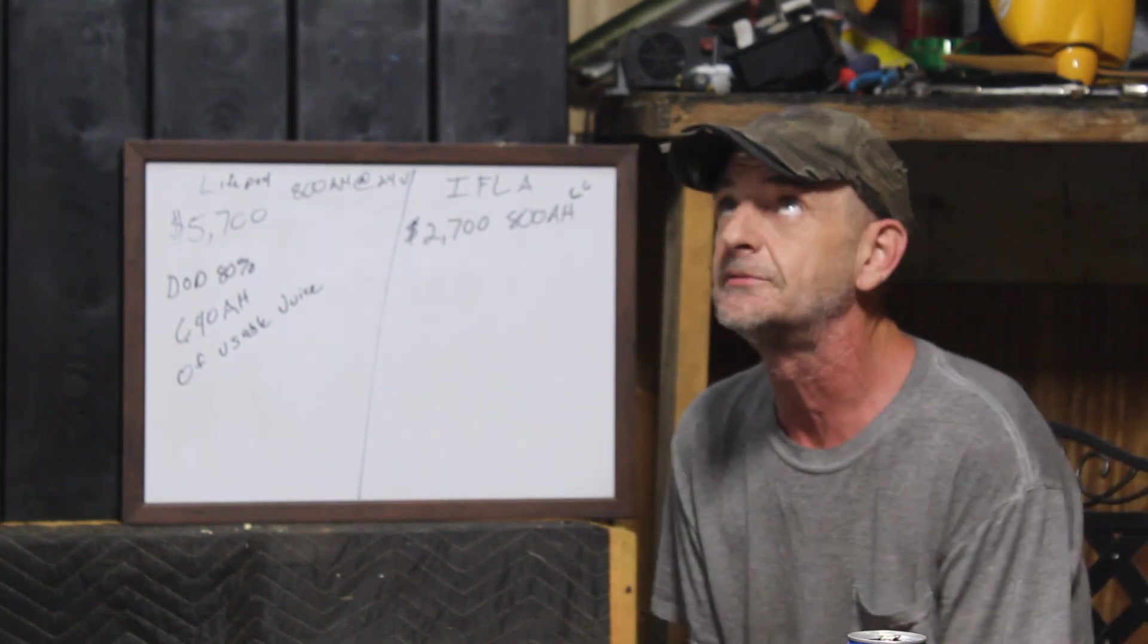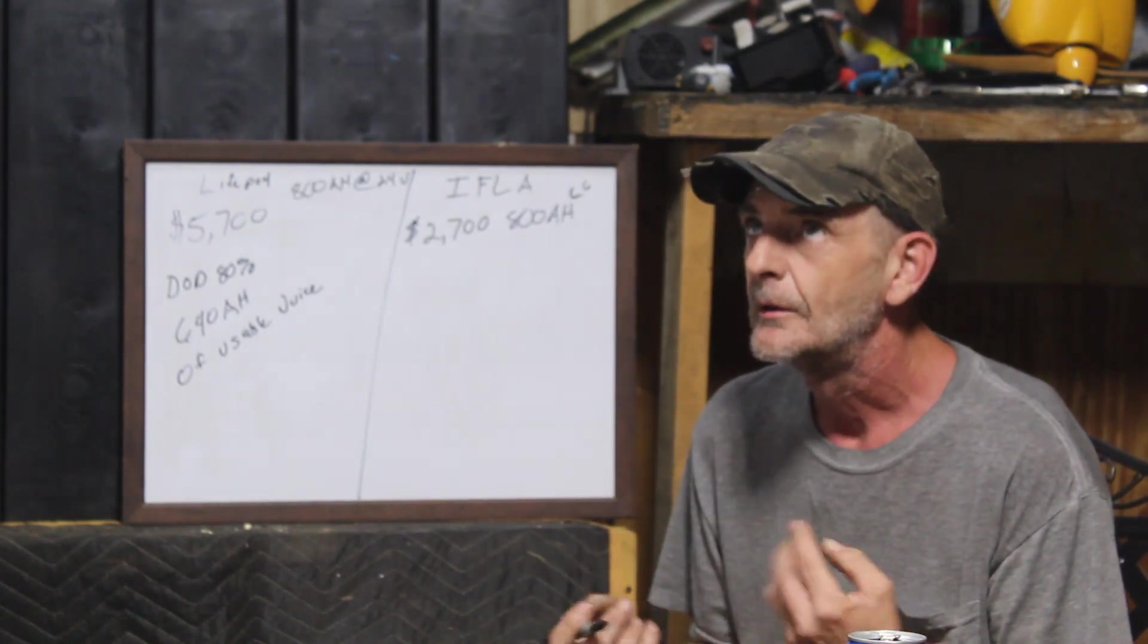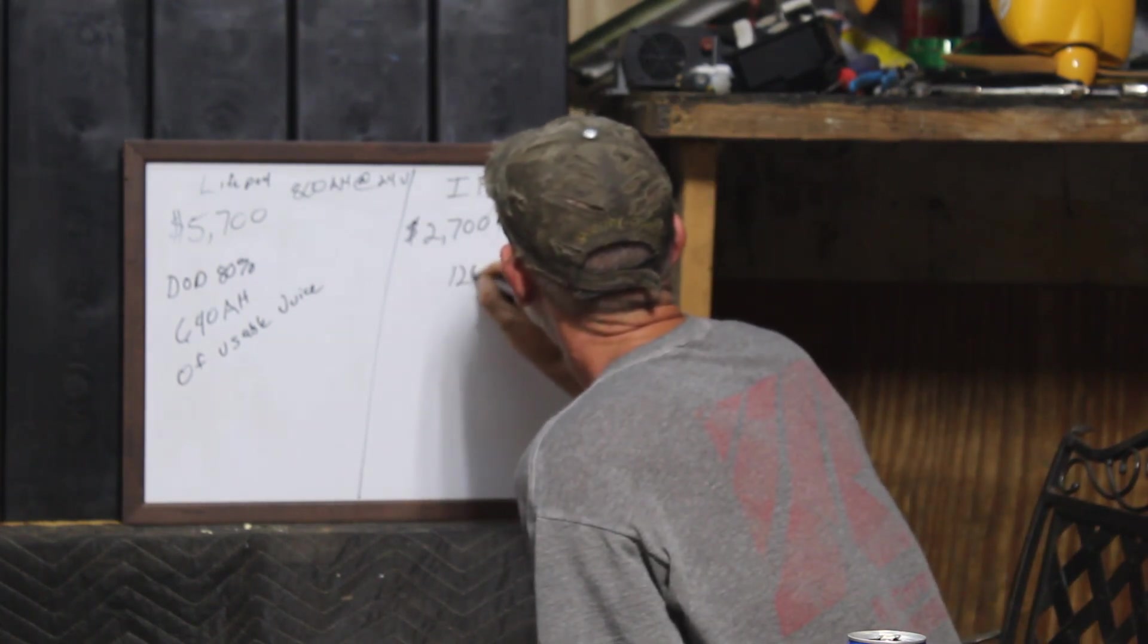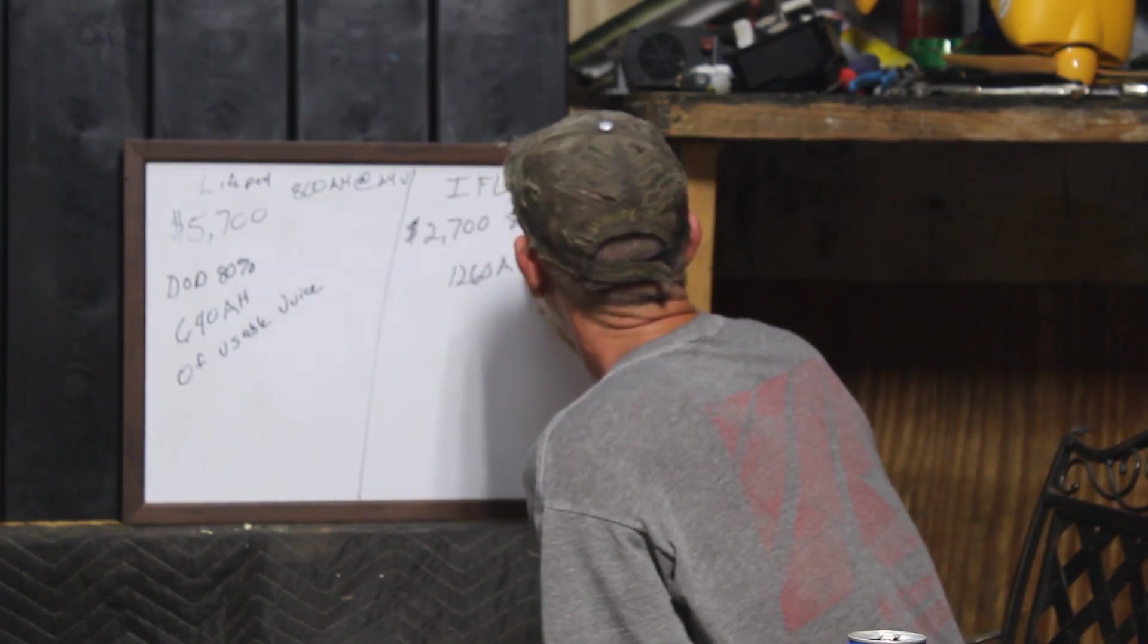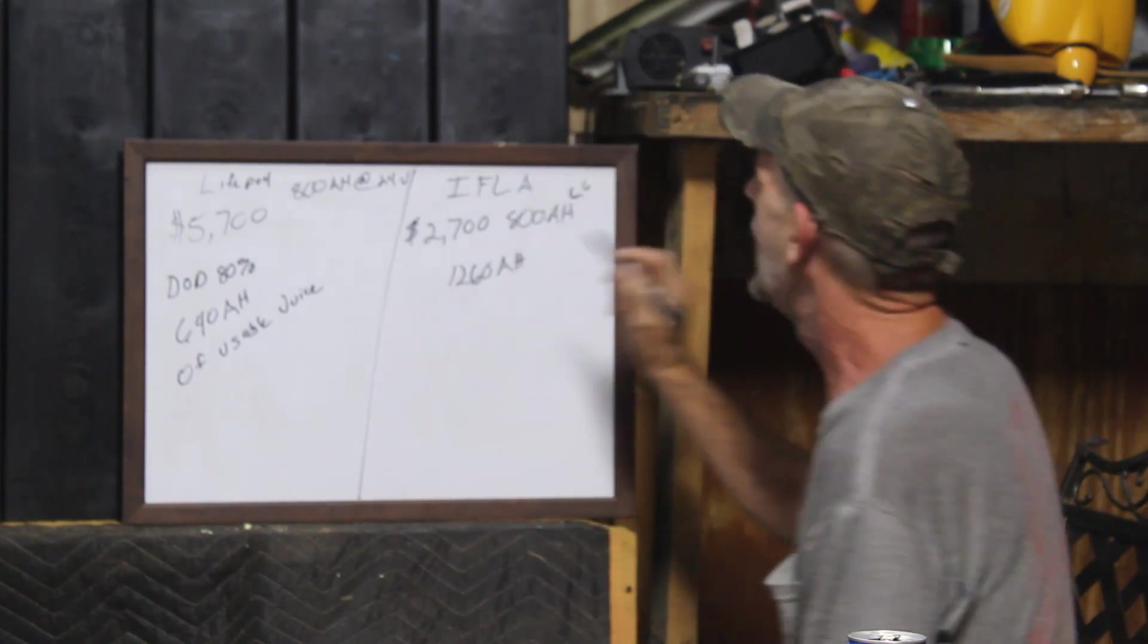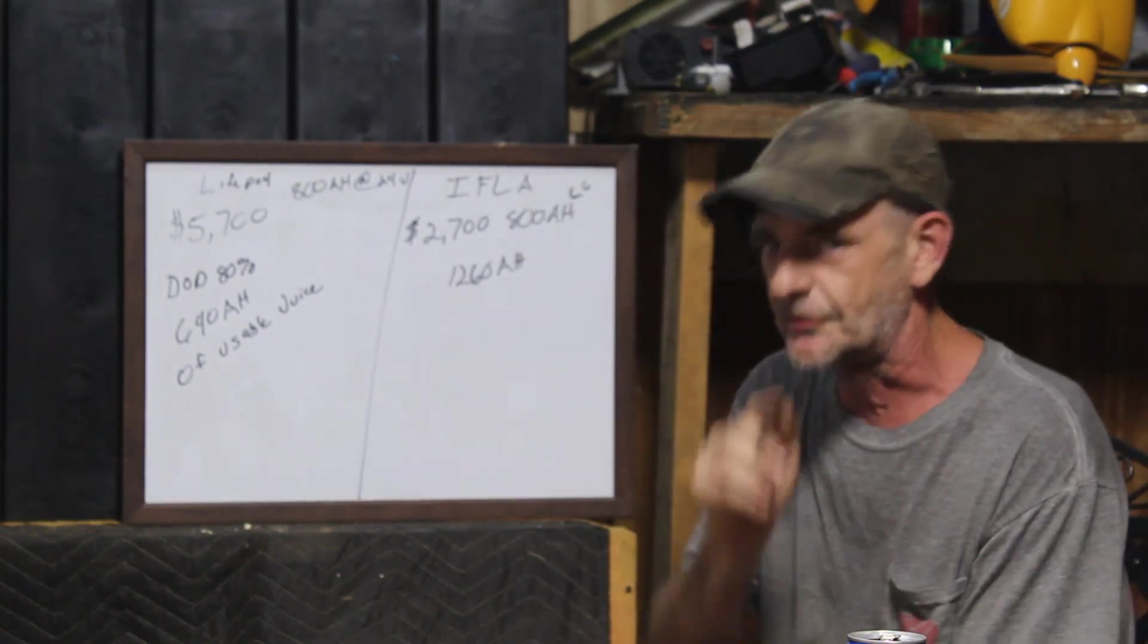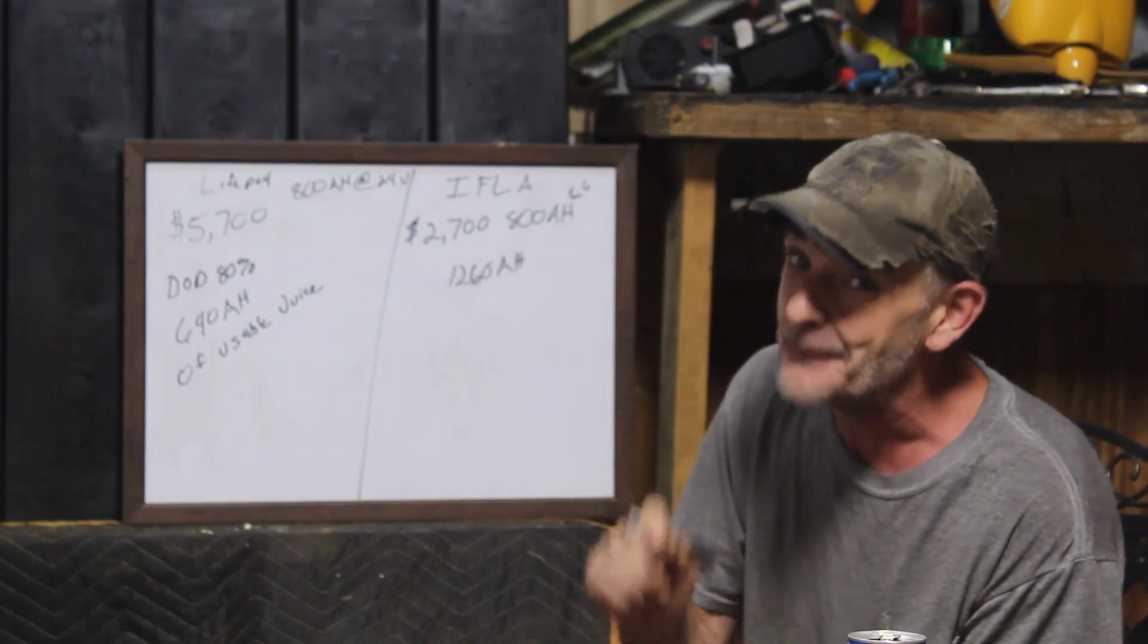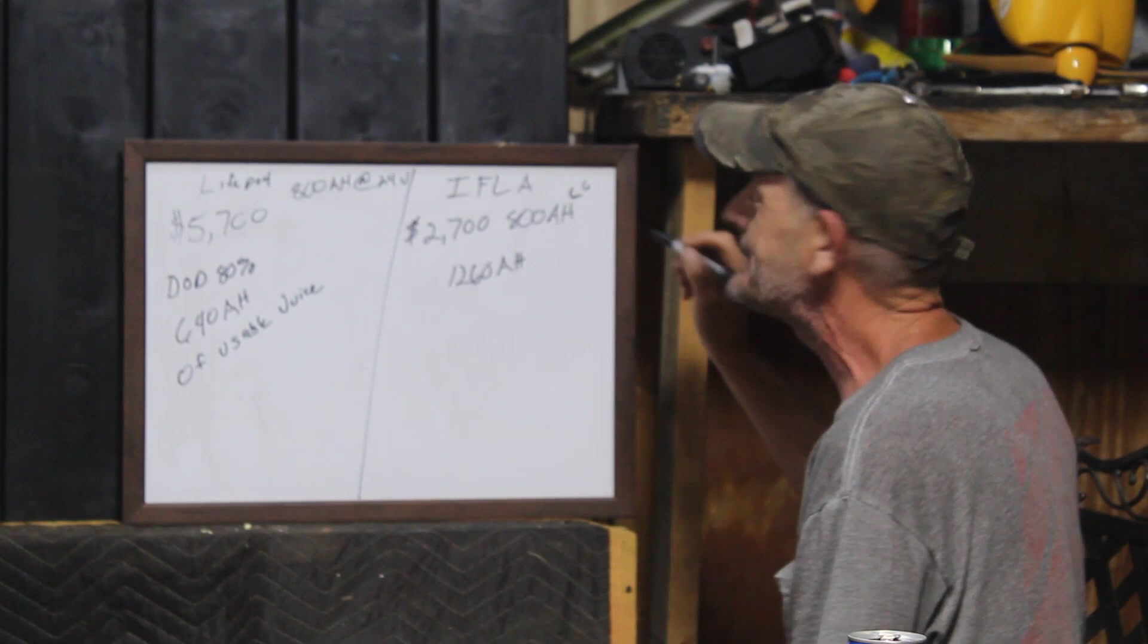1,260 amp hours is what we have at a C20 rate. Now the recommended depth of discharge for the IFLA - we can do 100%.